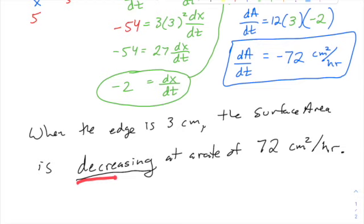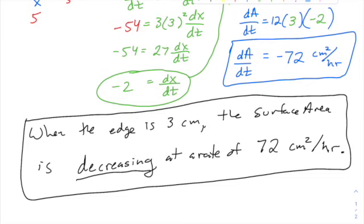At a rate of 72 centimeters squared per hour. And notice how I didn't use the negative, because when I translate into words logically, I'm using the word decreasing. That represents the negative rate of change. So you just say a rate of 72 centimeters squared per hour. It would be redundant to say decreasing at a rate of negative. In fact, that would almost make it positive, and that's not what we're going for.